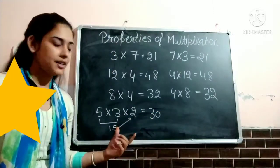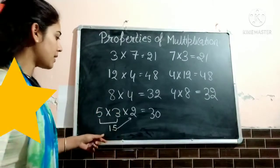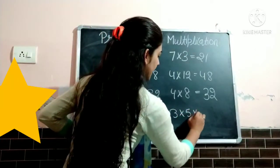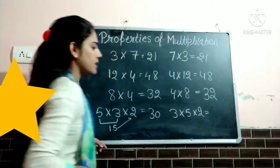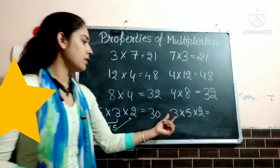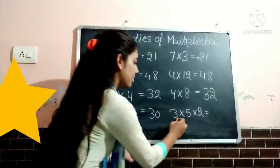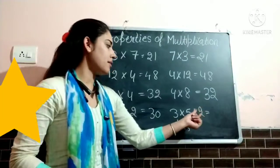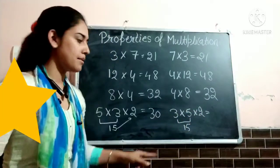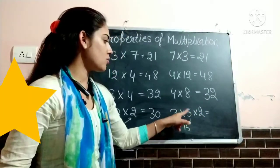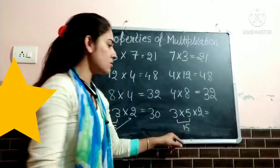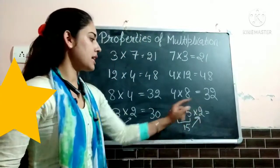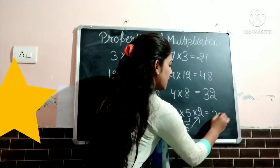Now let us change the order. 5 multiply 3, multiply 2 — let us write here 3 multiply 5, multiply 2. We change the order. Now 3 fives are again 15. Multiply the next number by the product of these two numbers — the product is 15, so we will multiply 2 by 15: 15 twos are 30. Again product is same.